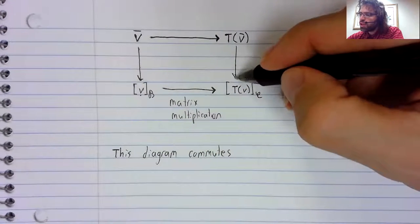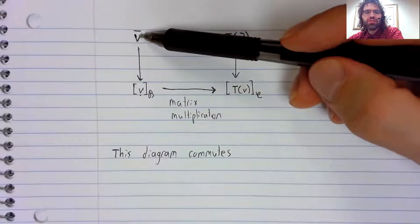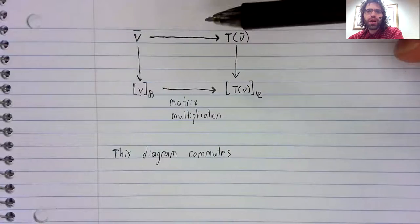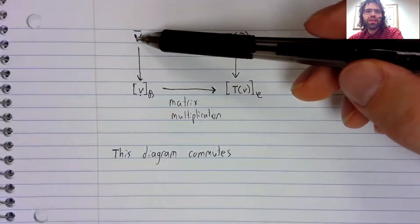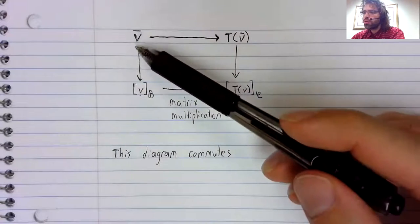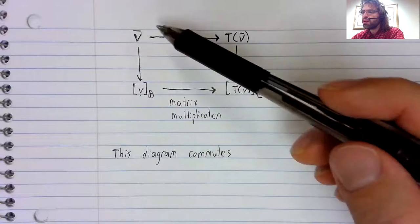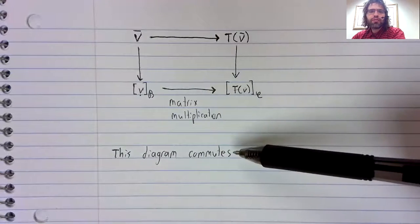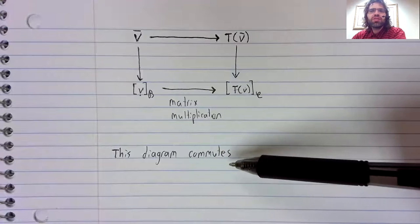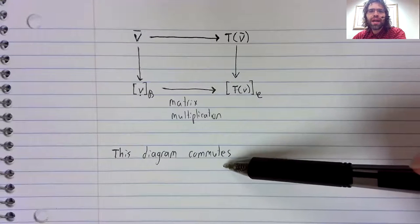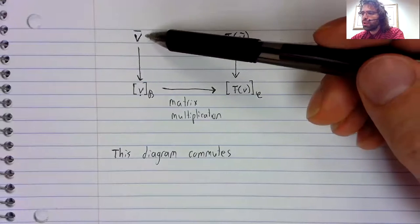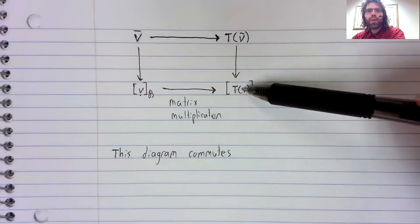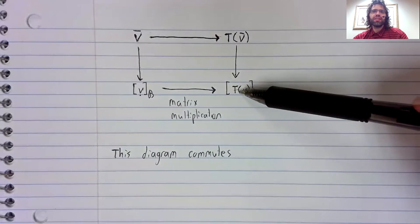The diagram commuting means that it doesn't matter which of those two paths you follow. Whether you go this way or this way, you'll wind up in the same place.